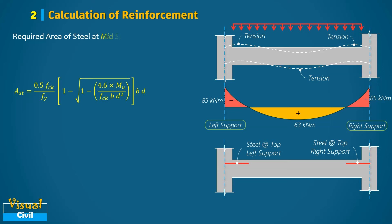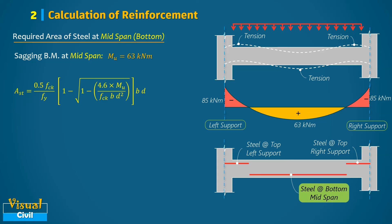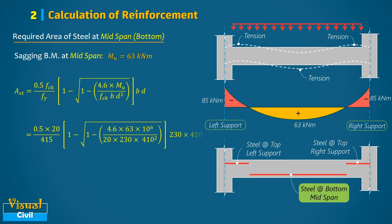Similarly, we calculate the steel required to resist the sagging moment at the mid span, which is 63 kilo-newton meter. This steel will be placed at the bottom of the beam. By substituting all the necessary values into the equation, the required steel area is 475 mm².